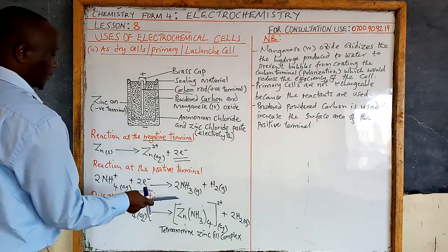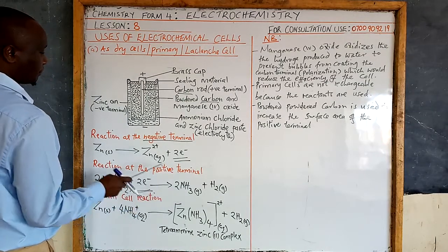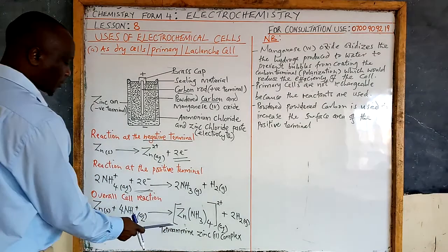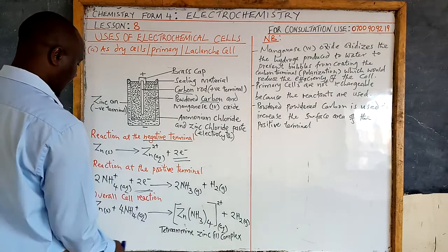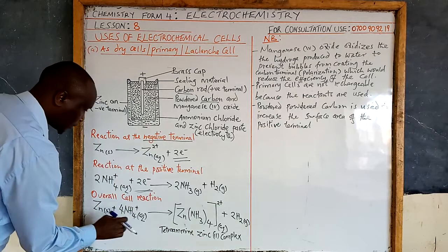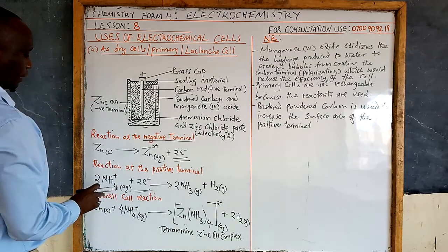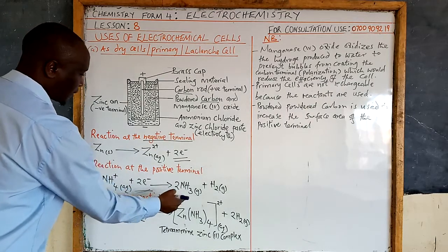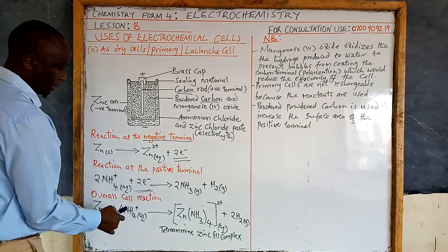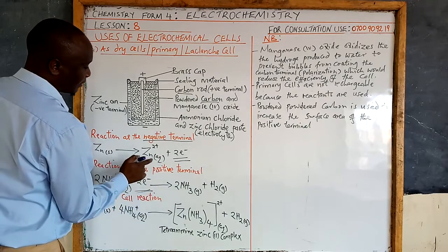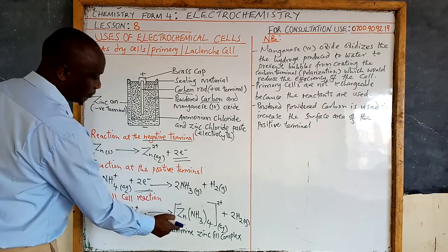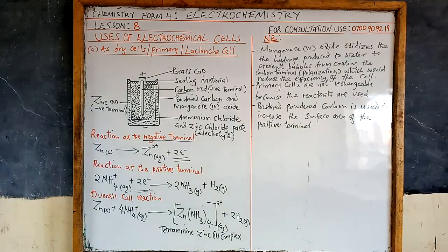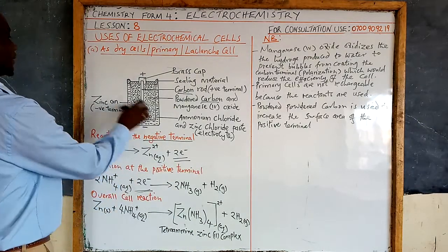The ammonia gas liberated reacts with the zinc ions to form a complex compound which we call the tetraamine zinc complex. So the ammonium liberates ammonia, the ammonia combines with the zinc ions — forming this complex compound which we call the tetraamine zinc(II) complex. These are the reactions that take place inside the cell.